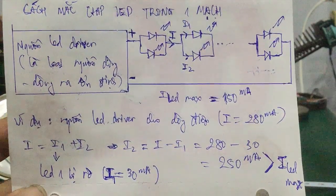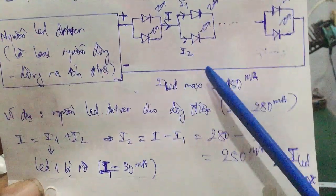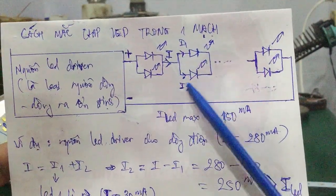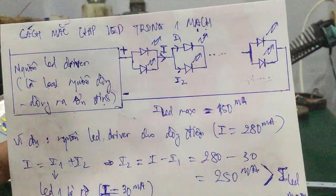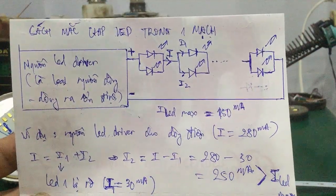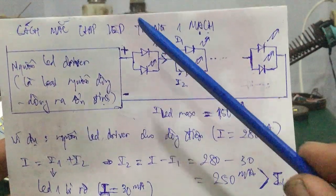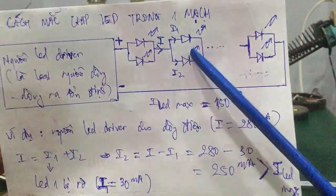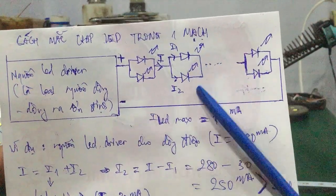Đây là cái nguyên nhân mà khi mà các bạn thay cái chip led mà không tốt, thì nó sẽ xảy ra cái tình trạng mà các bạn vừa thay chip led, nó sẽ cháy những chip led khác luôn, nó sẽ bị đứt mạnh luôn.